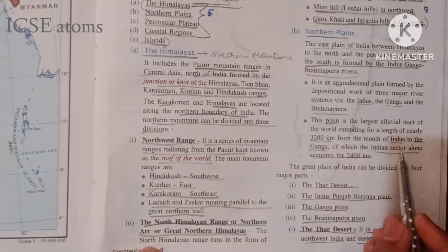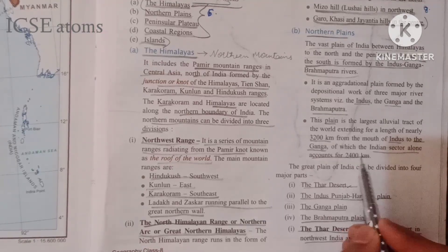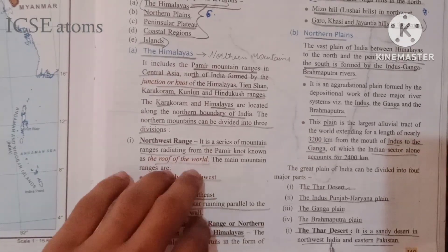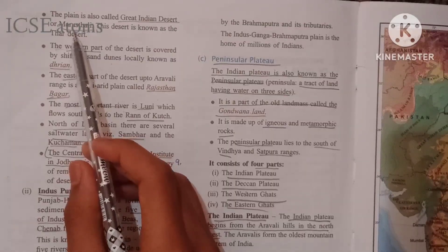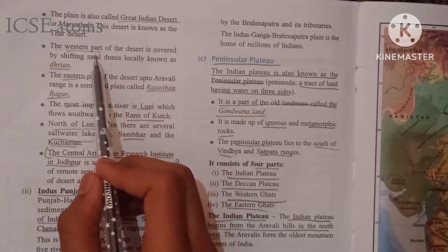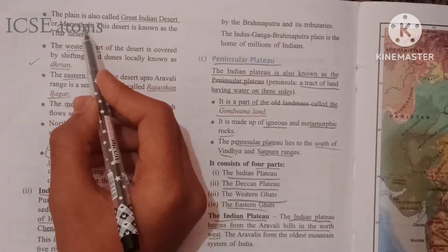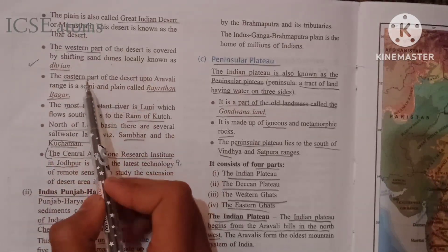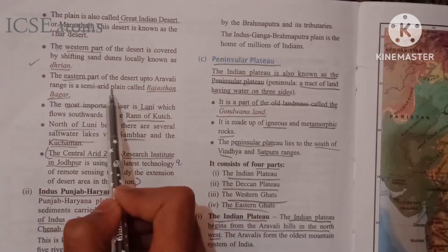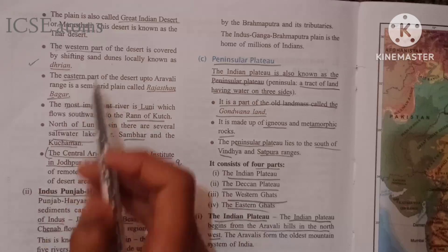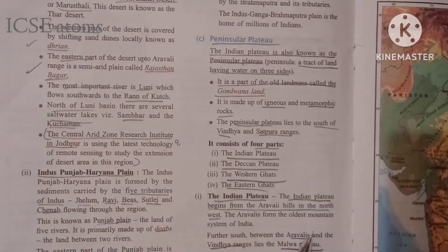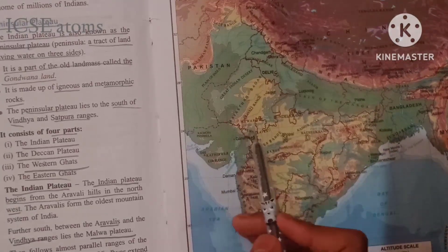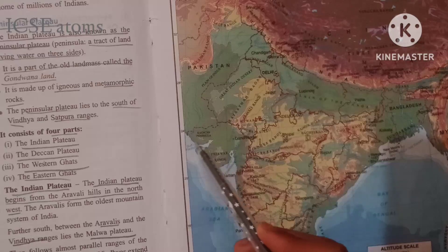The Thar Desert is a sandy desert in southwest India. This plain is also known as Marusthali, meaning the Great Indian Desert. The western part is covered by Dharni, and the eastern part of the Thar Desert up to the upper Aravalis is semi-arid and is called Rajasthani Bagar. The only river which flows in the Thar Desert is the Luni river, which flows into the Rann of Kutch.